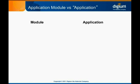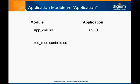When an application module is loaded, it will make a Dial Plan application available. For example, when the AppDial.so application module is loaded, it makes available the Dial Dial Plan application. However, you should be aware that an application module does not necessarily need to exist for there to be an application available in the Dial Plan. When the Music on Hold resource module is loaded, it will also load a Music on Hold Dial Plan application.